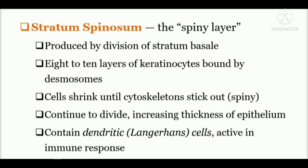The next layer, stratum spinosum, is also called the spiny layer — spiny means a sticky or stick-out nature. These cells are produced by division of stratum basale. It has eight to ten layers of keratinocytes which are bound by desmosomes. These cells continue to divide, increasing the thickness of the epithelium. It also contains dendritic cells, also called Langerhans cells, which are active in immune response.